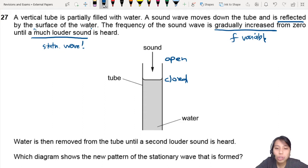Water is removed from the tube until a second louder sound is heard. Which diagram shows the new pattern of the stationary wave that is formed? So the first one, you have some kind of wave that forms.